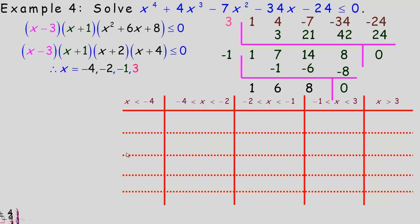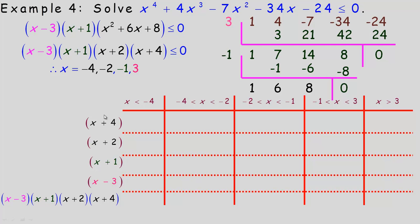Below negative 4, use negative 10: negative 10 plus 4, plus 2, plus 1, and minus 3 are all negative. The product of four negatives is positive — an even number of negatives multiplies to a positive. Between negative 4 and negative 2, use negative 3: negative 3 plus 4 becomes positive, but adding 2, 1, or subtracting 3 from negative 3 stays negative. So one positive and three negatives — an odd number of negatives — gives a negative product.